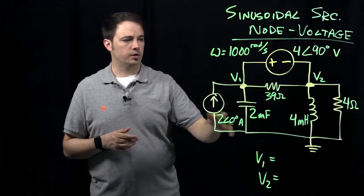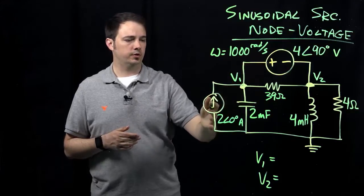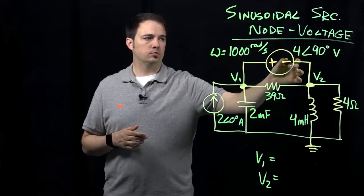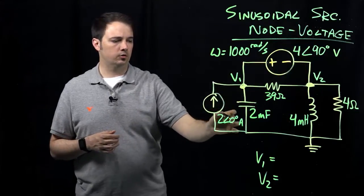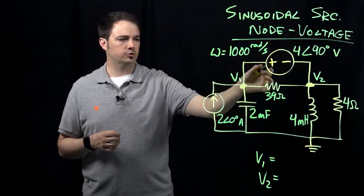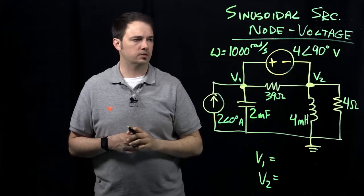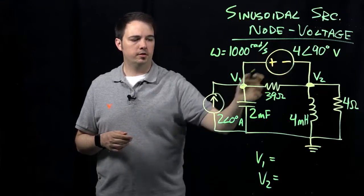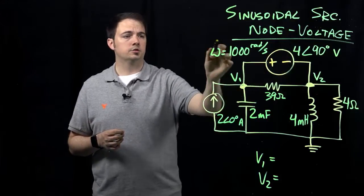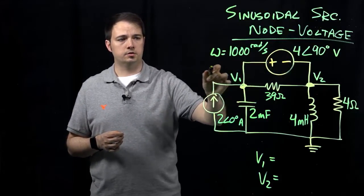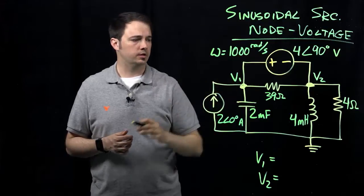The circuit that we're given has two different sources given in their phasor form. I have four at a phase of 90 degrees volts and two at an angle of zero degrees amps for the voltage source and current source respectively. Because those are already given in the phasor form they don't tell us anything about the frequency specifically. So let's say that information is given here separately, omega is a thousand radians per second.